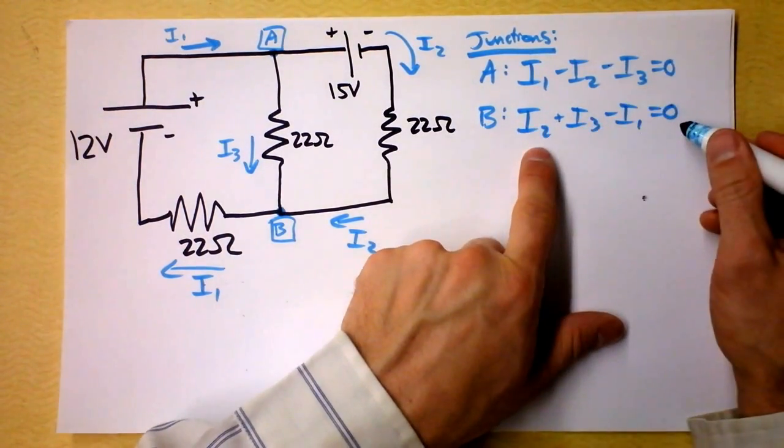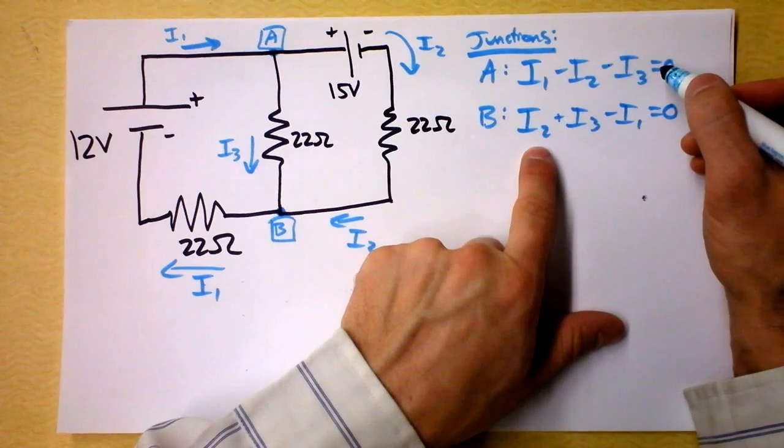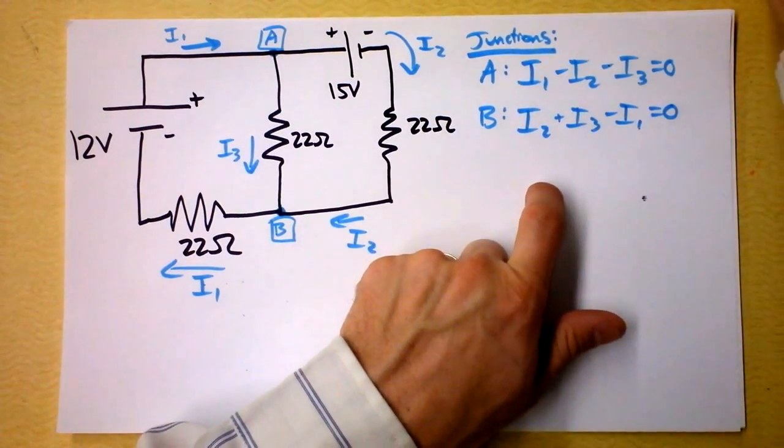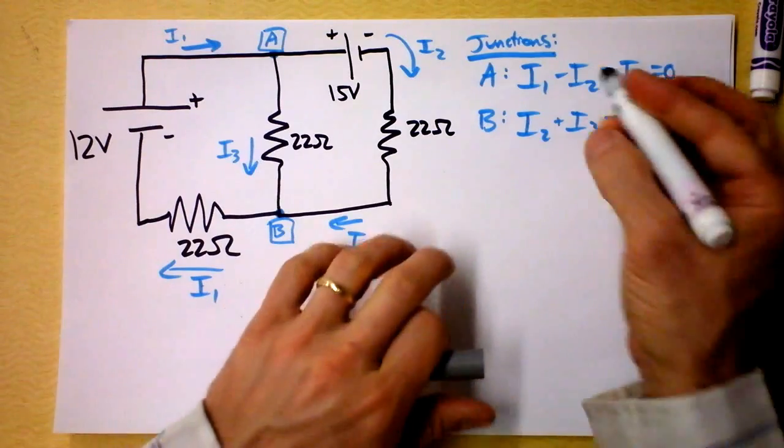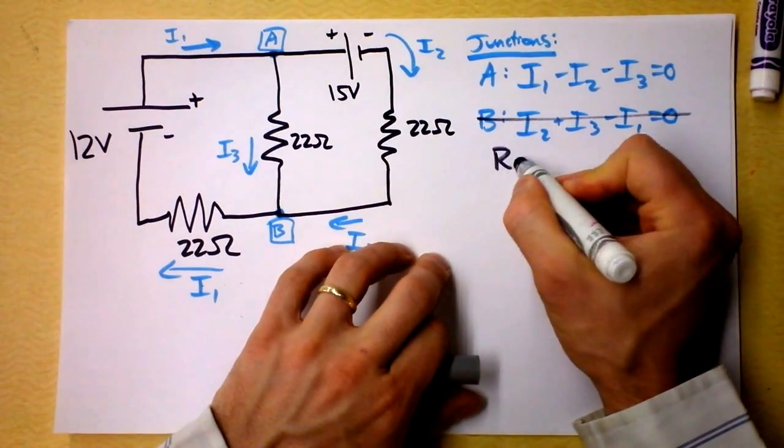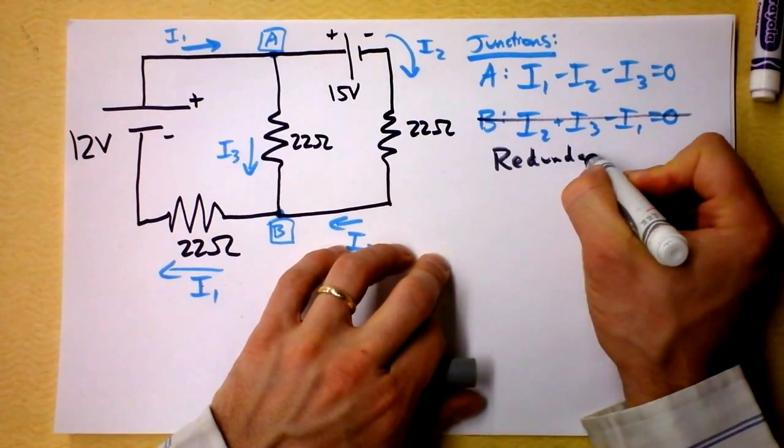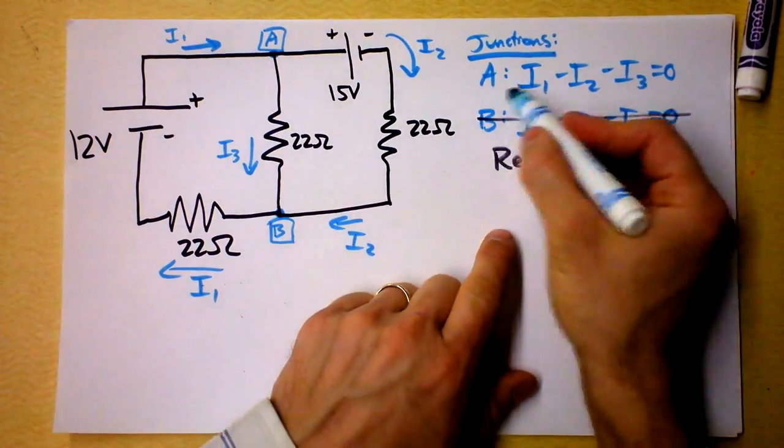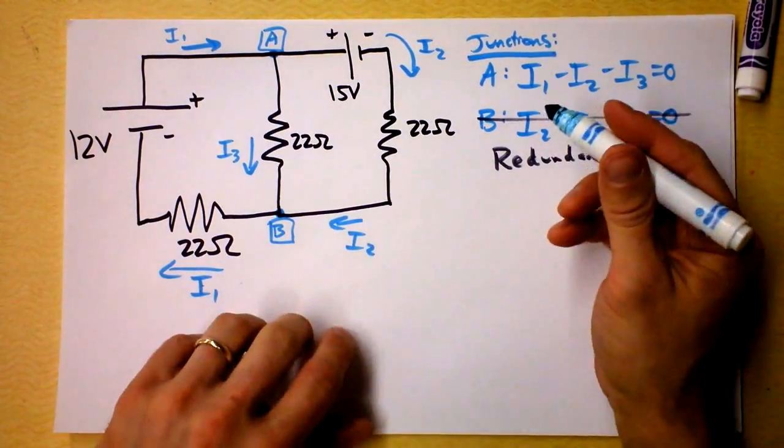Notice that this equation right here is that equation multiplied by negative 1. Alright, so that's redundant and I can just sort of cross it out. It is completely captured by the first junction.